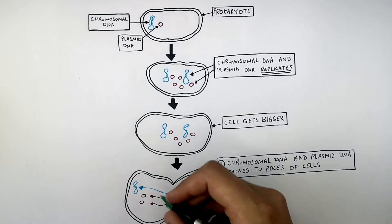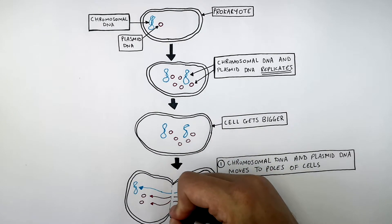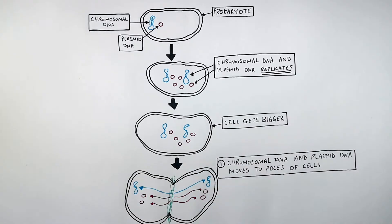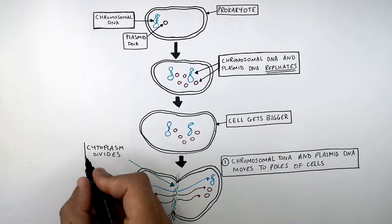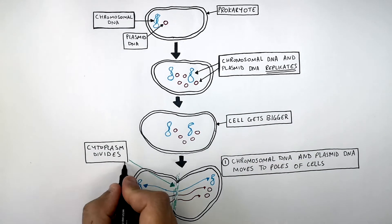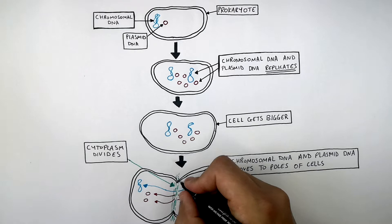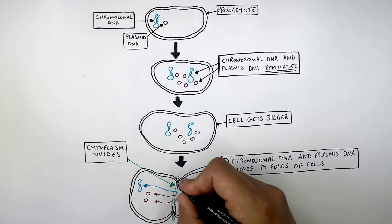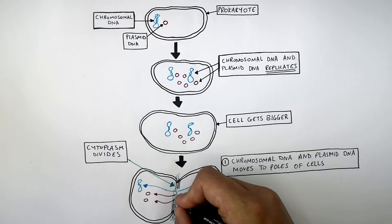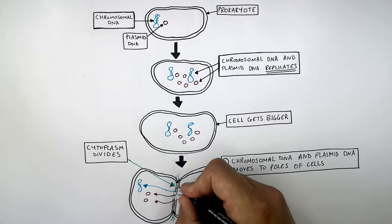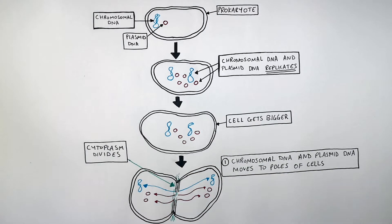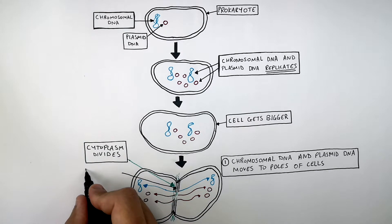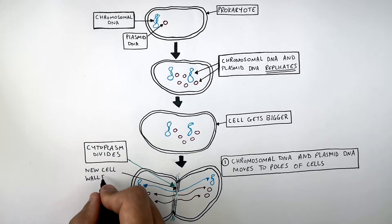What I'm drawing here is the cytoplasm beginning to divide — so the cytoplasm divides. To form two identical daughter cells, the cytoplasm divides and cell walls are now reforming along the divided cytoplasm, so new cell walls begin to form.